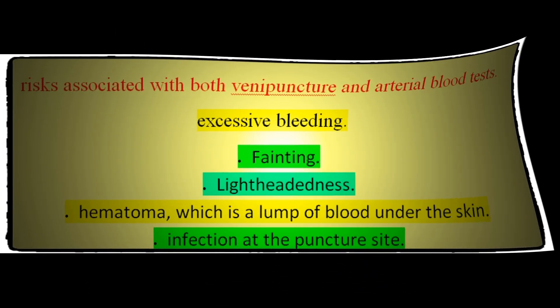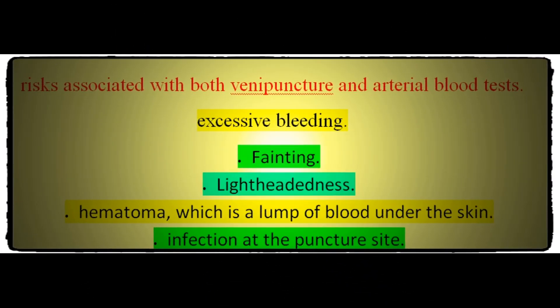There are slight risks associated with both venipuncture and arterial blood tests. These include excessive bleeding, fainting, lightheadedness, hematoma (a lump of blood under the skin), and infection at the puncture site. After the blood draw, your practitioner will ensure you're feeling well and will tell you how to care for the puncture site to reduce the chance of infection.